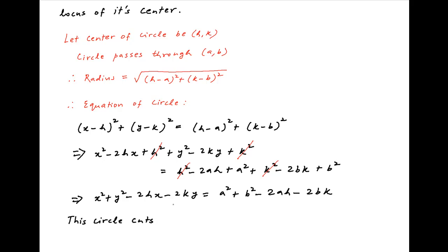Now we are given that this circle cuts the circle x squared plus y squared equal to p squared orthogonally.